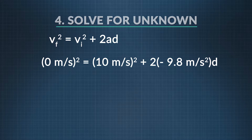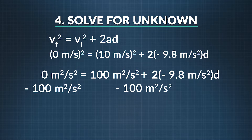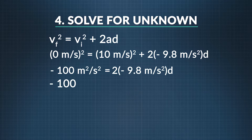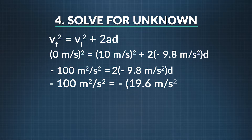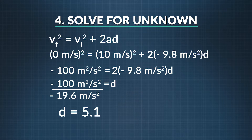In the final step, step four, we solve for the unknown, displacement. We get rid of the exponents by squaring the numbers and units within parentheses. Zero squared is zero, and ten squared is one hundred. Then subtract 100 from both sides, which leaves us with negative 100 meters squared per second squared equals negative 19.6 meters per second squared times our displacement. We divide both sides by 19.6, giving us a displacement of 5.1 meters.